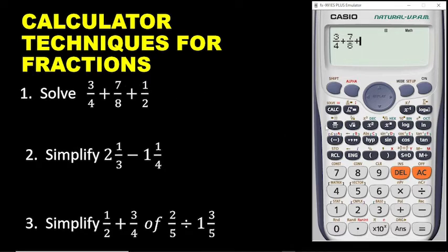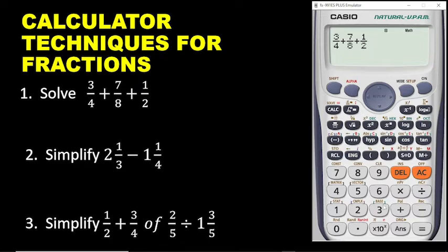That is also a fraction. So you go to fraction, you enter 1, then you go down and enter 2. So my fraction has been entered. Because we are dealing with an examination, it is always important for you to cross-check with the question to be sure that exactly what you have in the question is what has been entered. Once you are convinced, just press the equal sign. So when you add 3 over 4 plus 7 over 8 plus 1 half, you are getting 17 over 8.